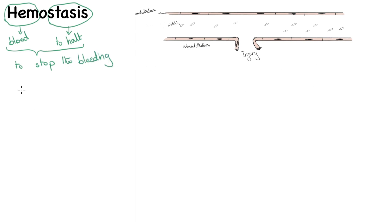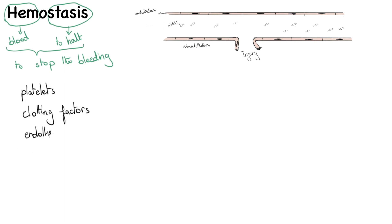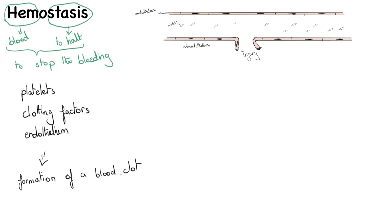Hemostasis is a well-orchestrated, precise process involving platelets, clotting factors, and endothelium. It occurs at the site of injury and ends up in the formation of a blood clot to prevent the extent of bleeding.